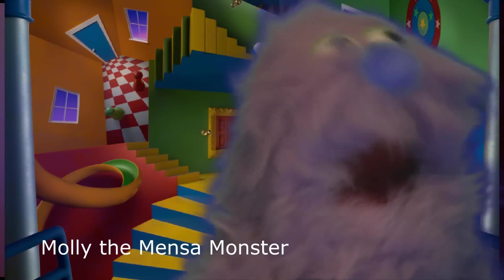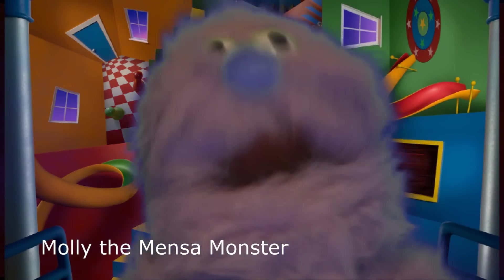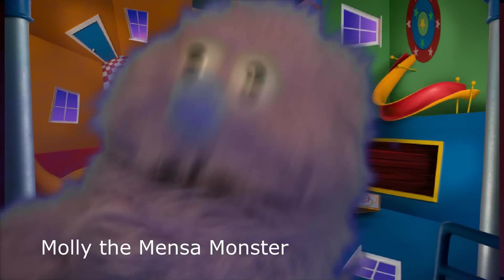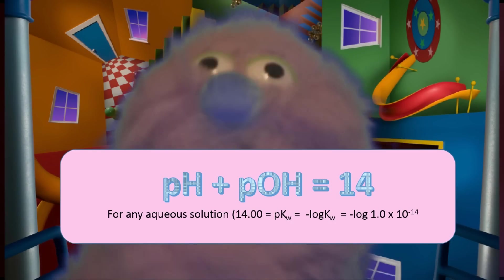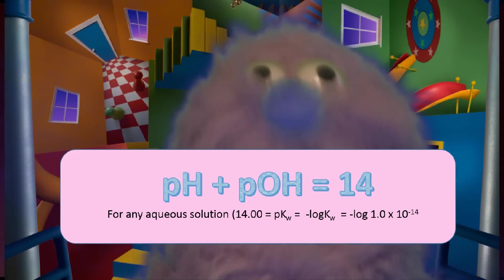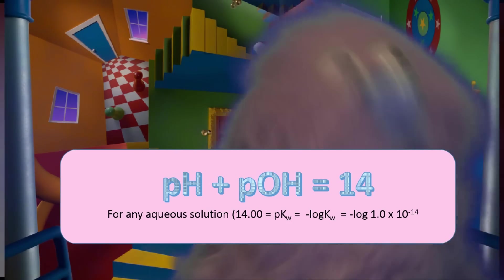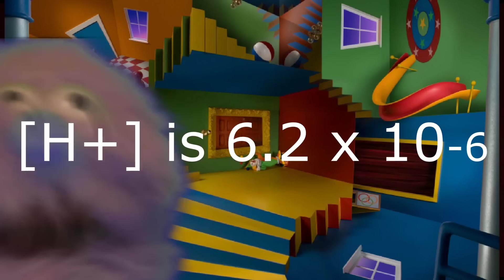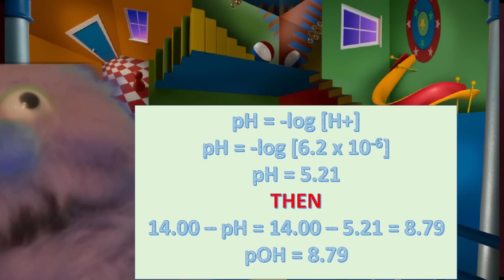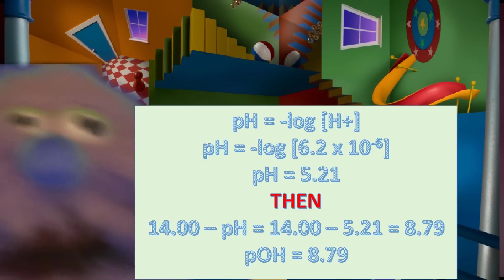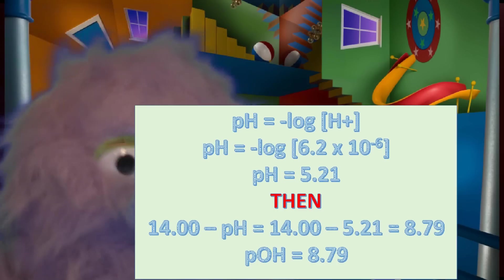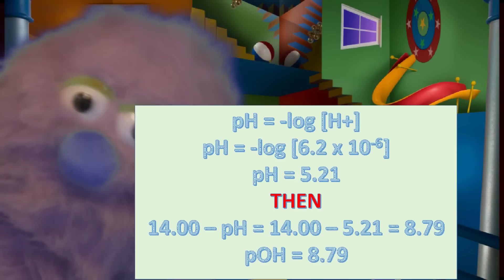A useful shortcut: to get from pH to pOH — if you want to know the concentration of the hydroxide in the solution — use the relationship: pH plus pOH equals 14. We got that from the product constant Kw. For example, if a solution has a hydrogen ion concentration of 6.2 × 10⁻⁶, its pH would be the negative log of that, which equals 5.21. Then 14 minus 5.21 equals 8.79 — that gives you the pOH. Can't get any easier than that.